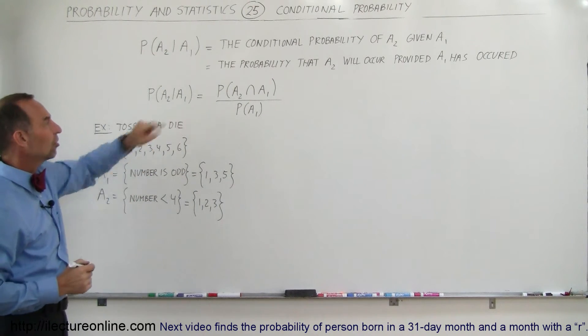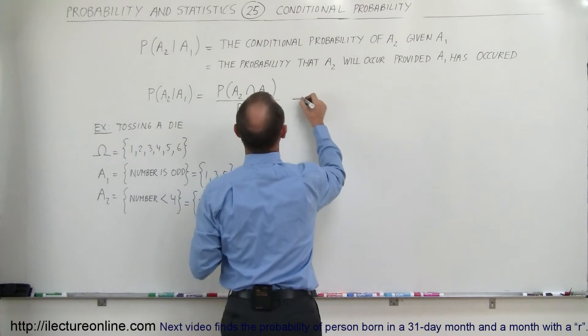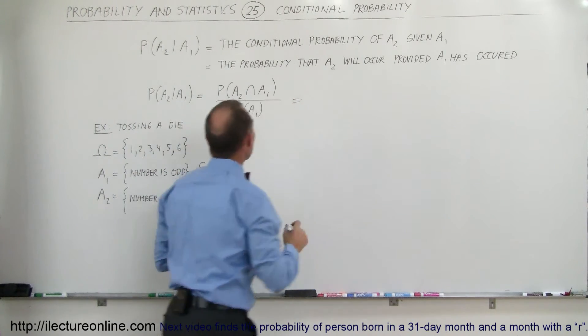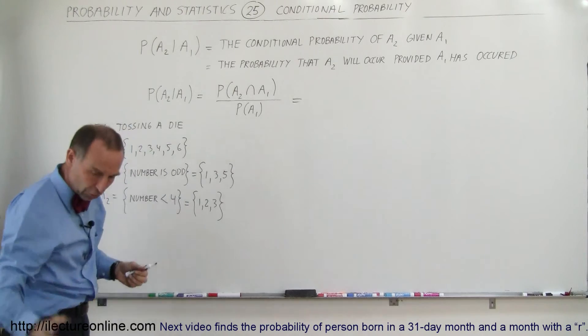We use this equation right here, which means that is equal to the probability of the intersection of A1 and A2. And what is the intersection of A1 and A2?